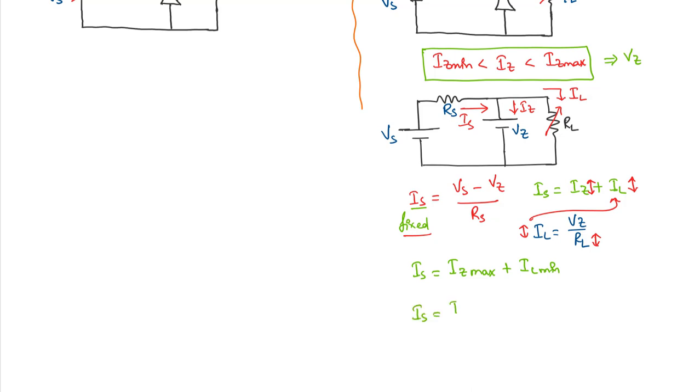Now at the other end when Iz is minimum and Il is maximum, Il will be maximum when RL is minimum. So let me write this quantity: this should be equal to Vz over RL max and this quantity will be Vz over RL min.